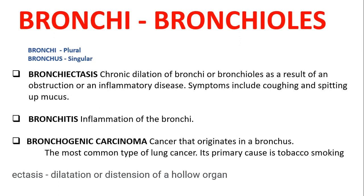'Bronchi' is the plural of 'bronchus,' and 'bronchioles' are the smaller branches. Examples: 'Bronchiectasis' is the chronic dilation of bronchi or bronchioles as a result of obstruction or inflammatory disease; symptoms include coughing and spitting of mucus. 'Bronchitis' is inflammation of the bronchi. 'Bronchogenic carcinoma' is cancer that originates in the bronchus, the most common type of lung cancer. The suffix 'ectasis' means dilation or distension of a hollow organ.